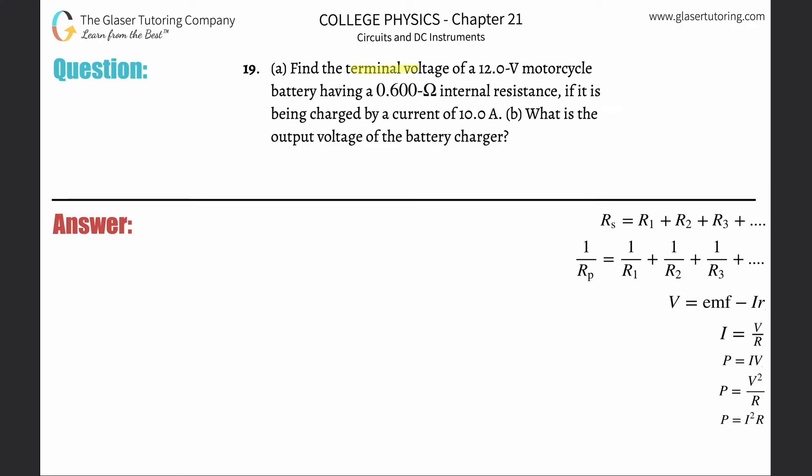Number 19, letter A: Find the terminal voltage of a 12-volt motorcycle battery having a 0.6 ohm internal resistance if it is being charged by a current of 10 amps. You have to know that this is kind of the theoretical maximum—this is the battery emf.